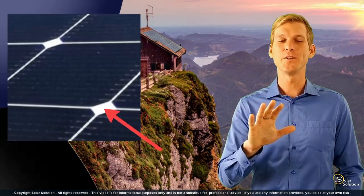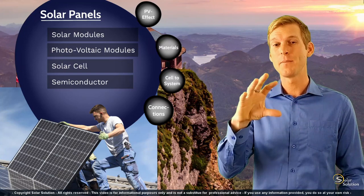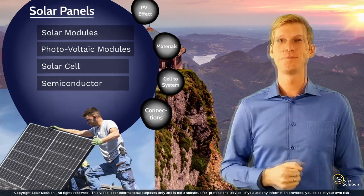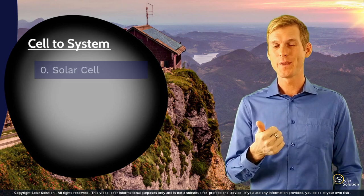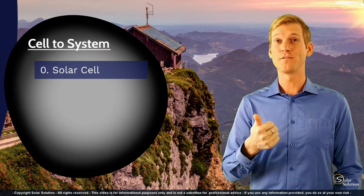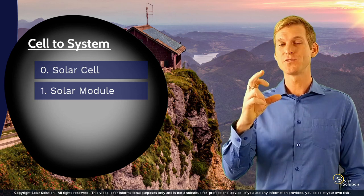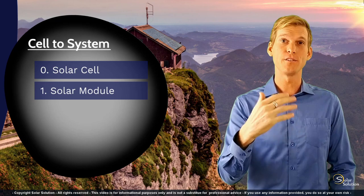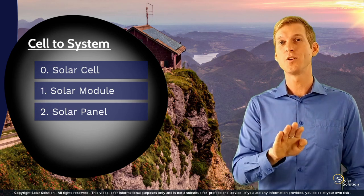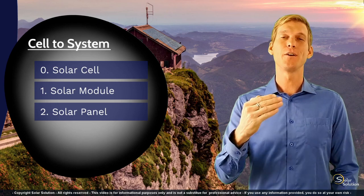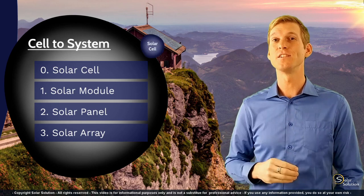That's enough about materials. Now let's look at how individual solar cells are combined to form a solar photovoltaic module. Going from small to big: we start with a solar cell. Wire several solar cells together in one frame and you have a solar module. Combine two or more solar modules into one rigid pre-wired frame from the factory and you have a solar panel. Combine several of those pre-wired solar panels into one overall system and you have a solar array. Let me show this with visual photos of what each step actually looks like.